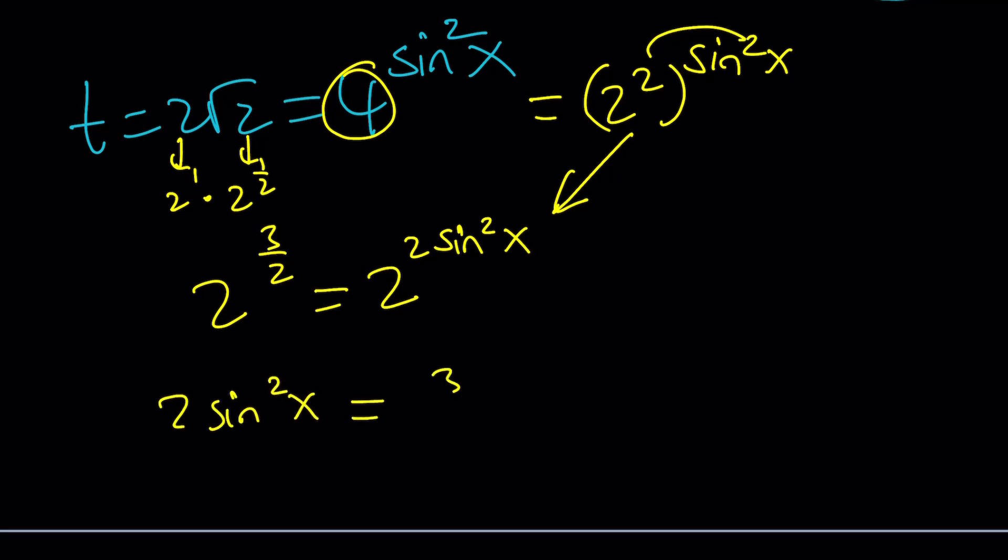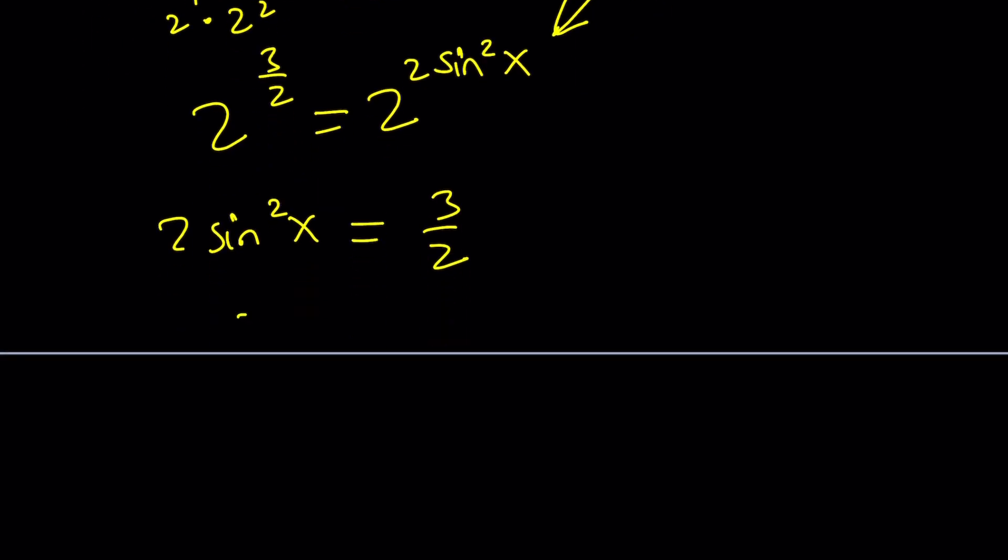2 sine squared x equals 3 halves. And now we're going to divide both sides by 2 or multiply by 1 half, which is even better. Because you have a fraction. 3 fourths. Awesome. Don't you like that? Because if you square root this, you're going to get a nice value. And the other value is also going to be nice and super-duper nice because these are special angles. Awesome.